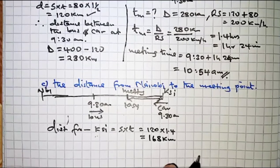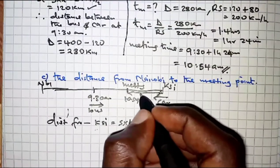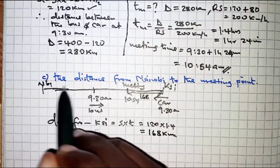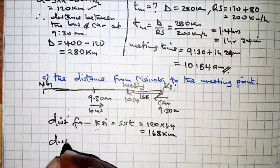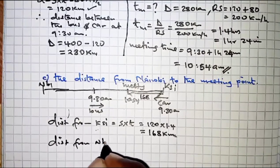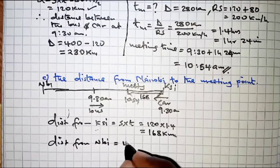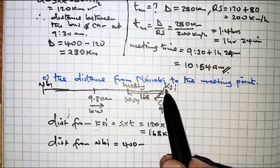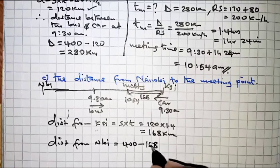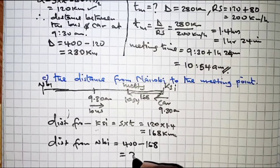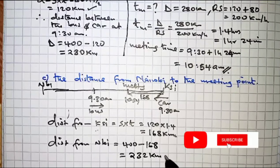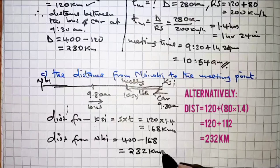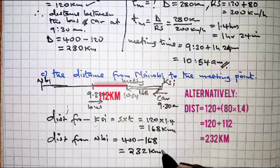Once we have that, the distance from Kisii to the meeting point is 168 km. Our aim is to get the distance from Nairobi to the meeting point, so we subtract: 400 km minus 168 km equals 232 km. Alternatively, you can calculate the distance covered by the bus between 8 a.m. and 9:30 a.m., then from 9:30 a.m. to 10:54 a.m., and add those together.